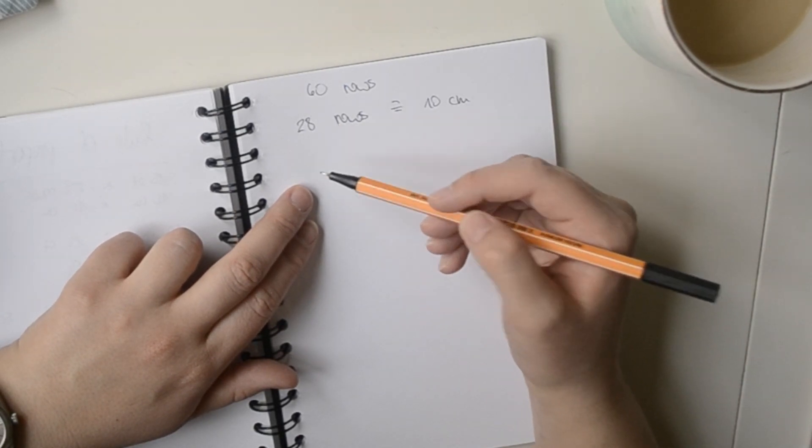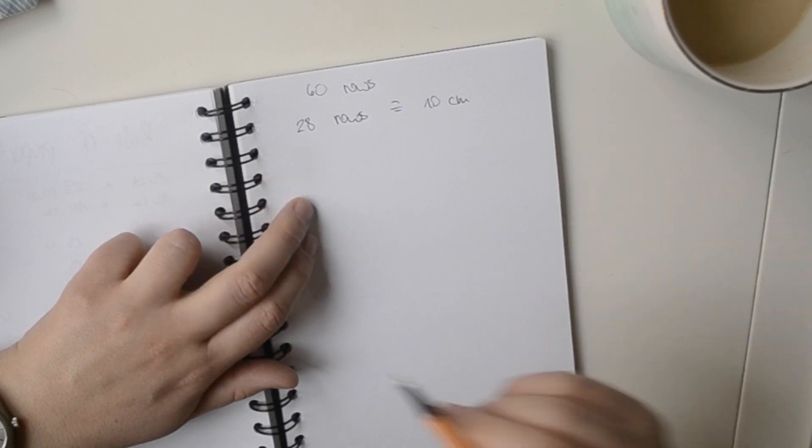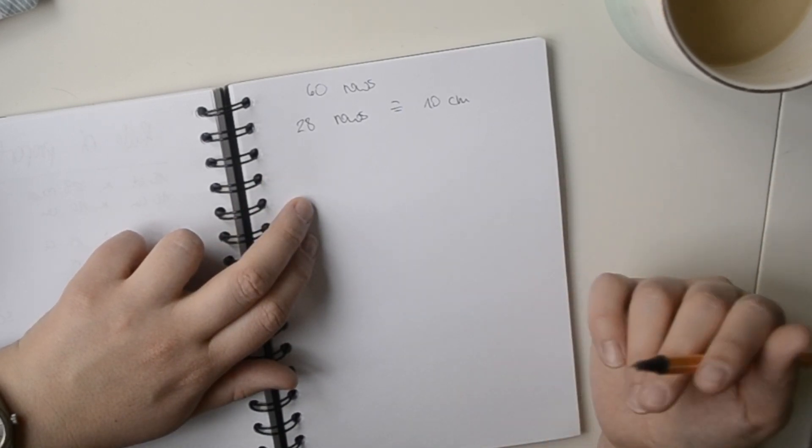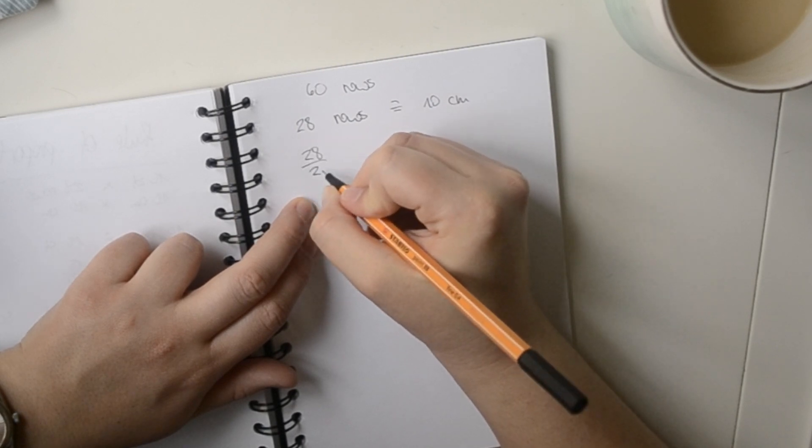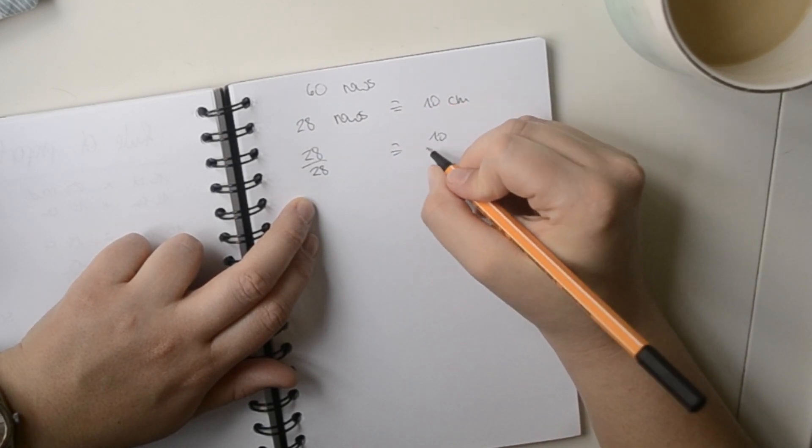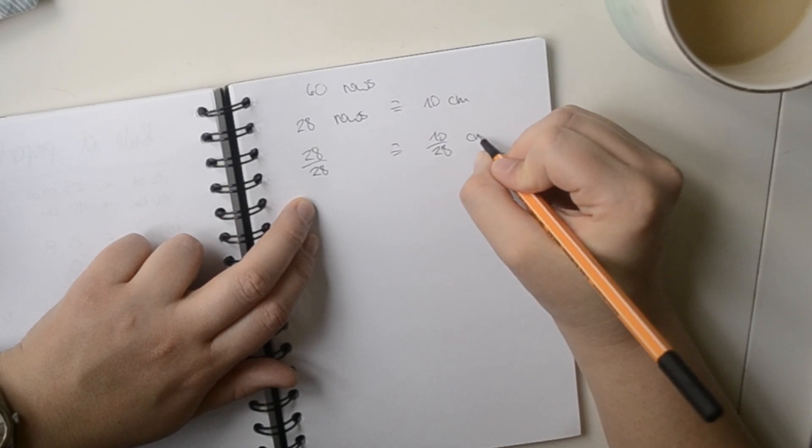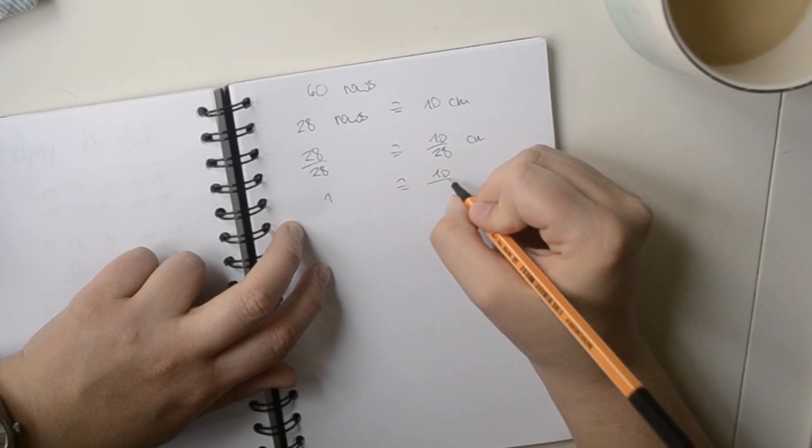And now we are dividing down to 1 again, because then it is easy to multiply by the number that we want. So we are 28 rows divided by 28, and 10 divided by 28. And this is 1 is equal to 10.